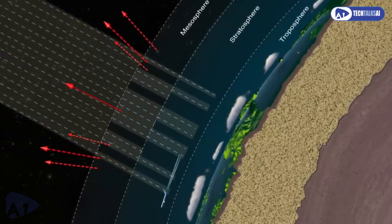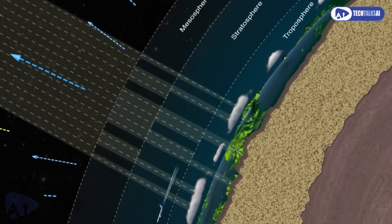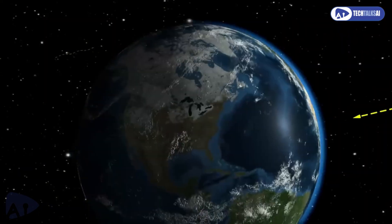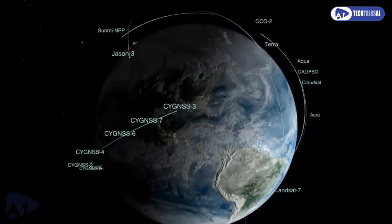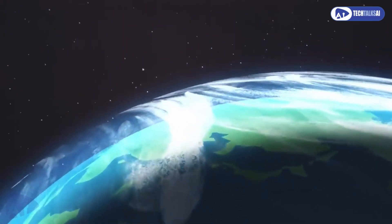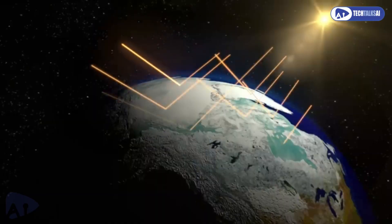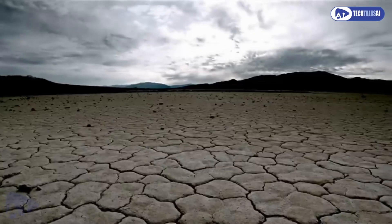For instance, solar radiation management aims to reflect a small percentage of sunlight back into space to cool the planet. While this might seem like a viable short-term solution, the long-term effects are largely unknown. Altering the planet's natural processes could disrupt weather patterns, leading to unintended consequences for agriculture and ecosystems.